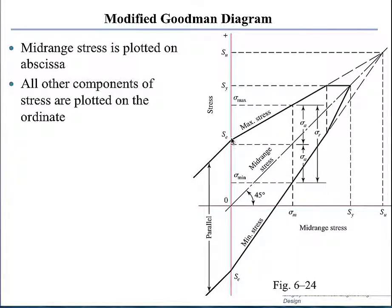These lines extend to the case when the mean is zero, which is fully reversed loading. For fully reversed, the maximum equals the minimum but with a negative sign. In the compressive stress range, the two lines remain parallel, because experimental data shows that compressive mean stress has no effect on fatigue strength, so we can ignore it — the lines remain parallel in the compressive range.